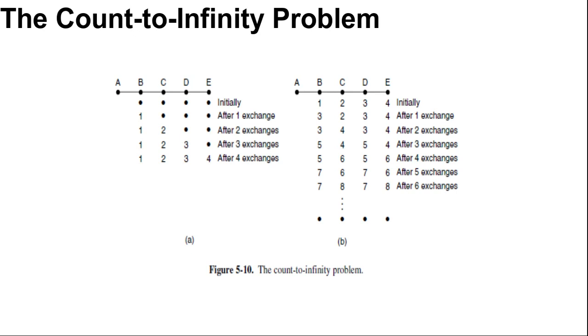How the fast good news propagates. Consider the five node linear networks as in figure here. And where the delay metric is the number of hops. Suppose A is down initially and all the other routers know this. In other words, they have all recorded the delay to A as infinity. You can see here. And then, when A comes up, the other routers learn about it via the vector exchange for simplicity. We will assume that there is a gigantic gong somewhere that is struck periodically to initiate a vector exchange to all routers simultaneously.